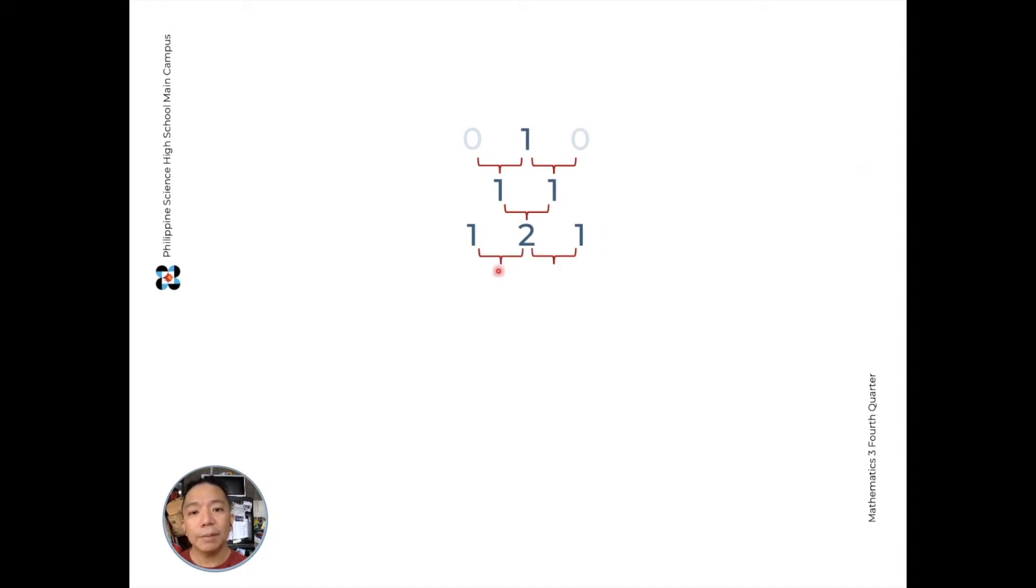The next level, we'll have 3 and 3 from 1 plus 2 and 2 plus 1. Then, we just put 1 on both ends. Because imagine there's a 0 here and a 0 here. And so on. And that generates our Pascal's Triangle.